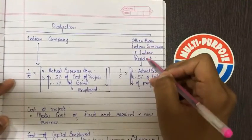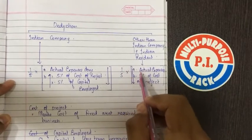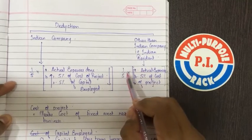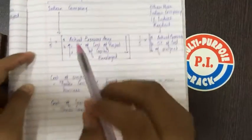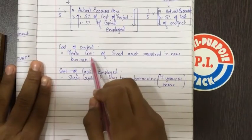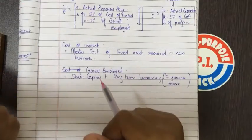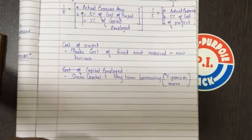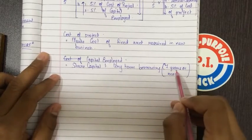Similarly, in case of other than Indian company (Indian resident), one-fifth of actual expenses or 5% of cost of project — whichever is lower — divided by five, will be allowed in the previous year as eligible deduction. Cost of project means cost of fixed assets required in the business. Capital employed means share capital plus long-term borrowings — seven years or more to be termed as long-term borrowing.